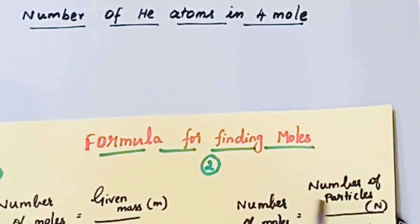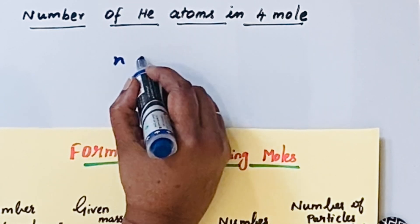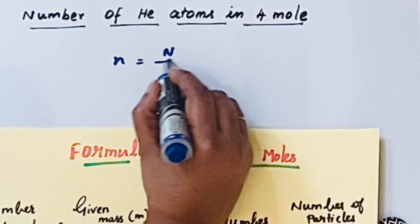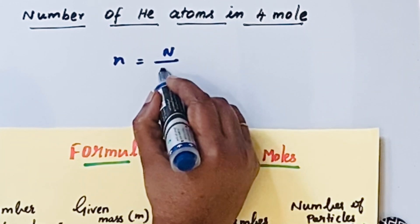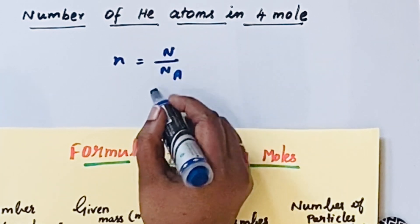First, let us write the formula: number of moles, that means n, is equal to number of particles (N) divided by Avogadro's number (NA). They asked us to find out the number of helium atoms.